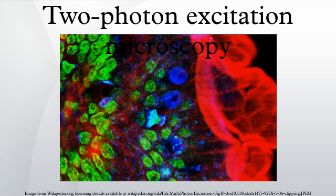Effectively, excitation is restricted to the tiny focal volume, resulting in a high degree of rejection of out-of-focus objects. This localization of excitation is the key advantage compared to single-photon excitation microscopes, which need to employ additional elements such as pinholes to reject out-of-focus fluorescence. The fluorescence from the sample is then collected by a high-sensitivity detector, such as a photomultiplier tube. This observed light intensity becomes one pixel in the eventual image. The focal point is scanned throughout a desired region of the sample to form all the pixels of the image. The scan head is typically composed of two mirrors, the angles of which can be rapidly altered with a galvanometer.